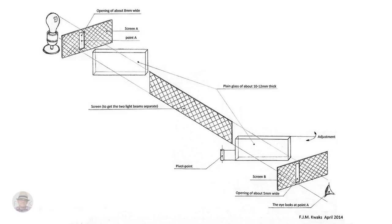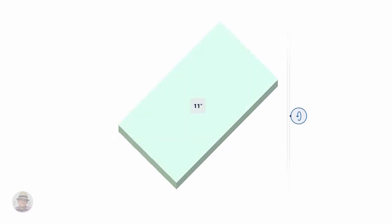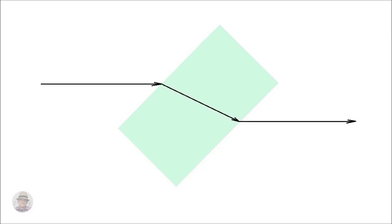I will now add prisms that could make changes in the speed of light visible. First I will show you what I am going to use prisms for. You see here symbolically a piece of glass that I have placed at an angle of 45 degrees. A beam of light will pass through this piece of glass as shown.